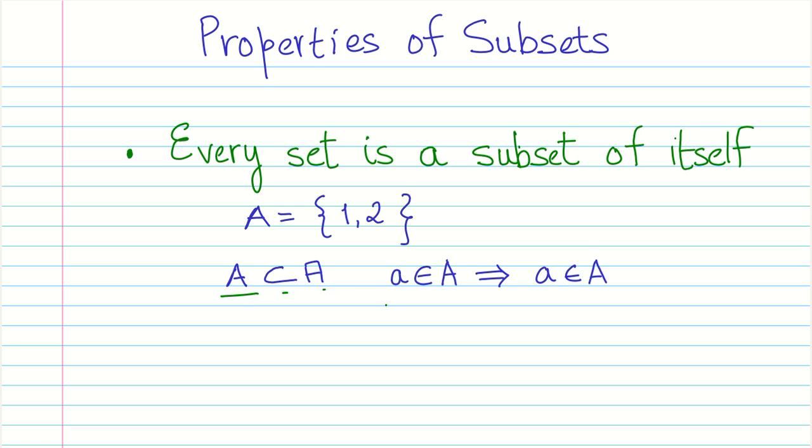And that is because of the way we define the subsets. Any element a belonging to a subset A implies that it belongs to itself. And therefore it's kind of intuitive that every set is a subset of itself.